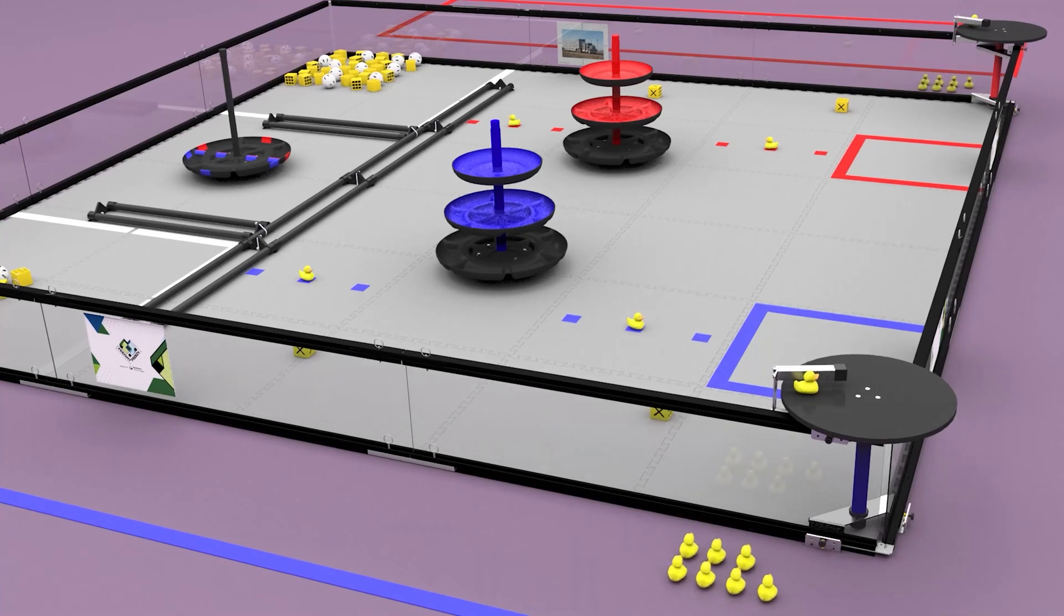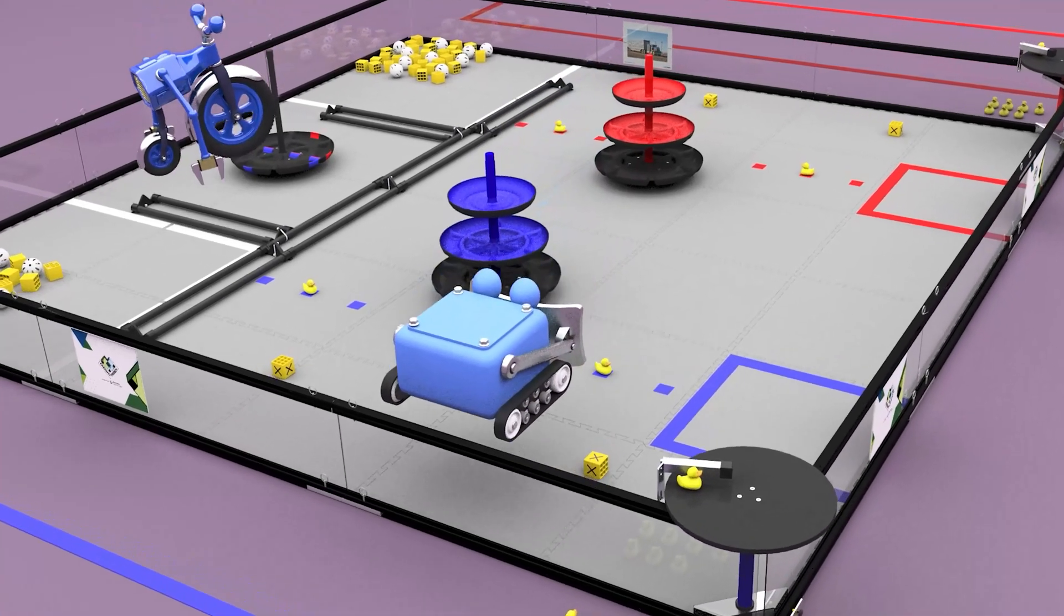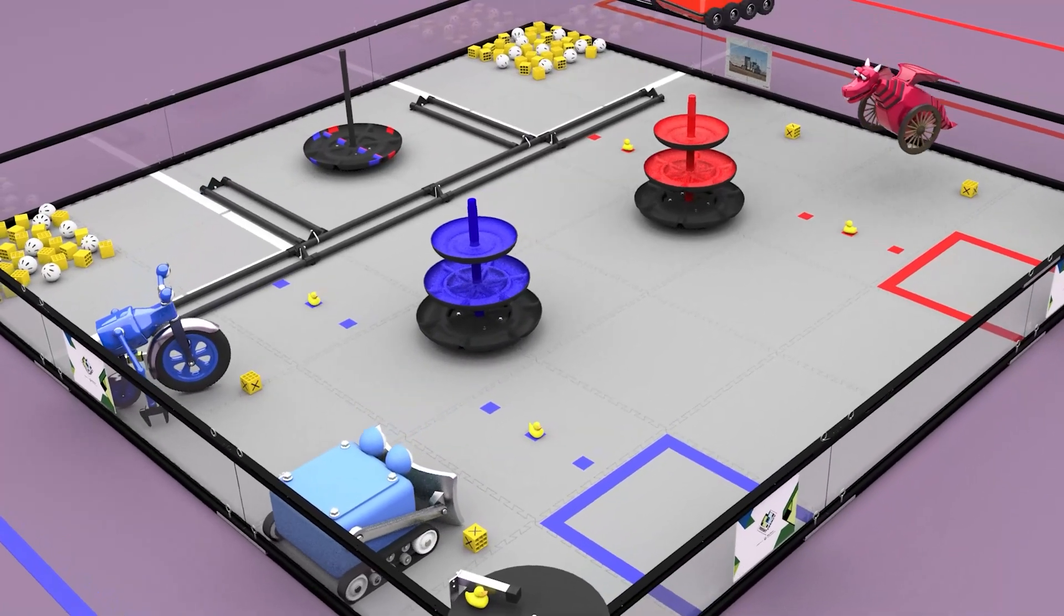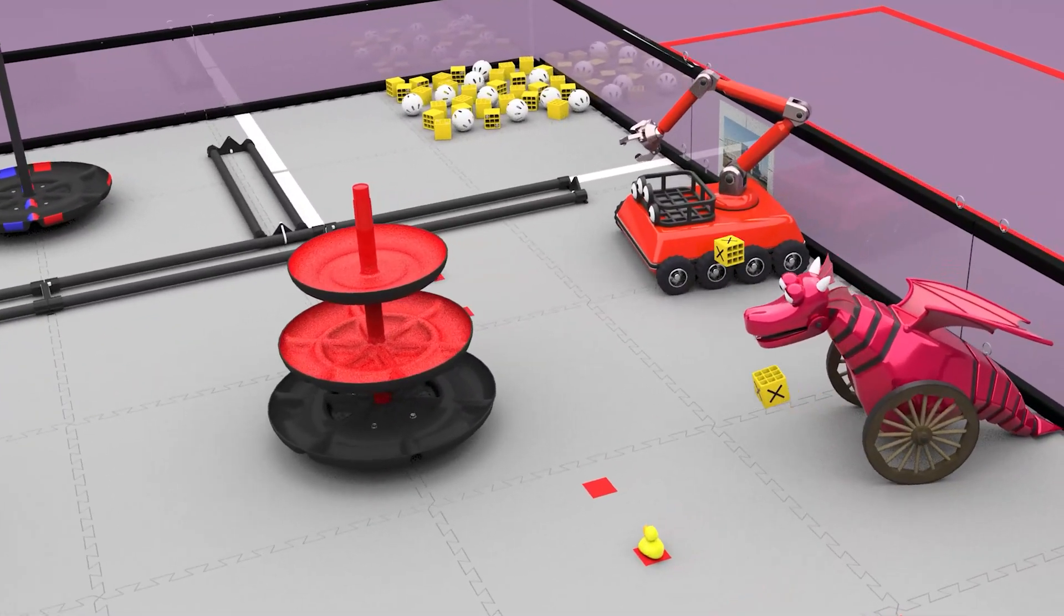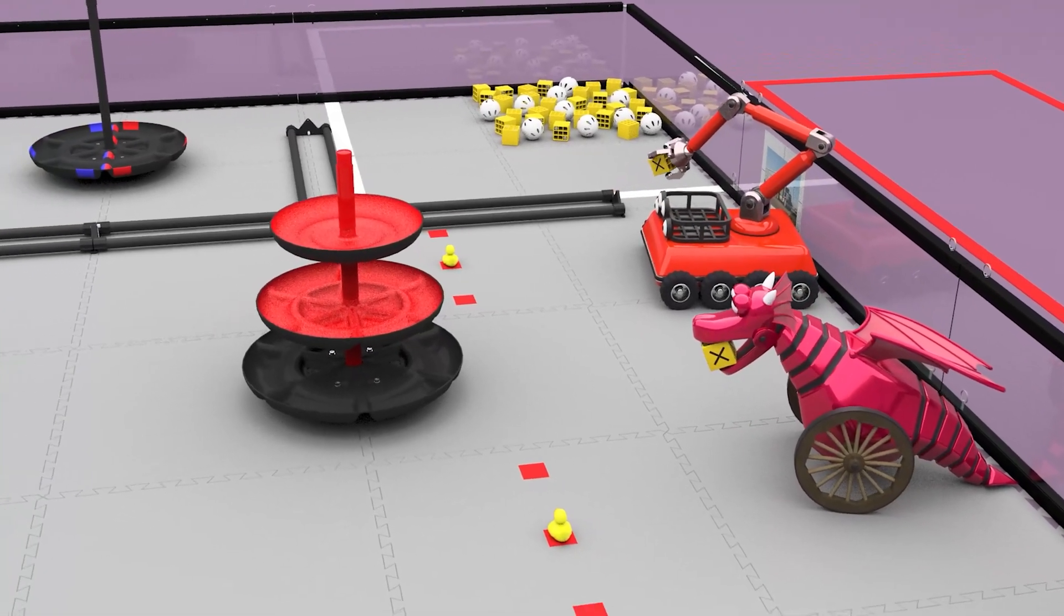Teams then place their robots on the field, touching the wall adjacent to their alliance station, but not in a warehouse. The teams then place one pre-load box for each robot.